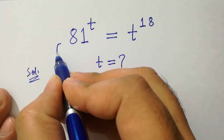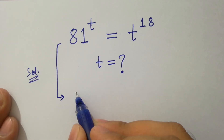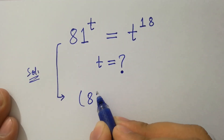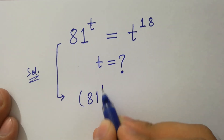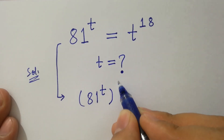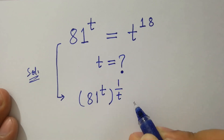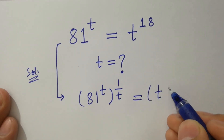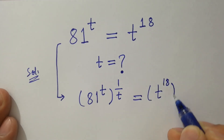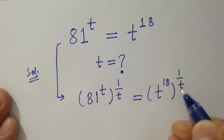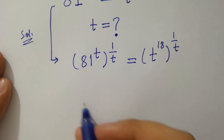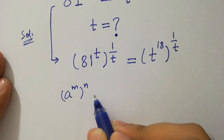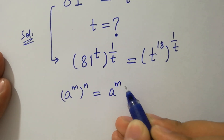To solve this problem, take power 1 over t on both sides. As 81 to the power t, to the whole power 1 over t, equal to t to the power 18, to the whole power 1 over t. As a to the power m, to the whole power n, equal to a to the power mn.